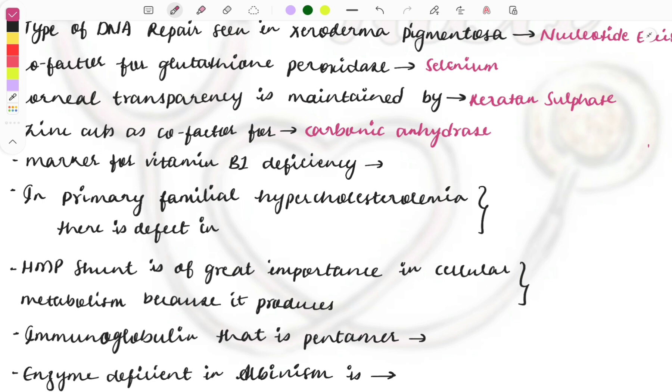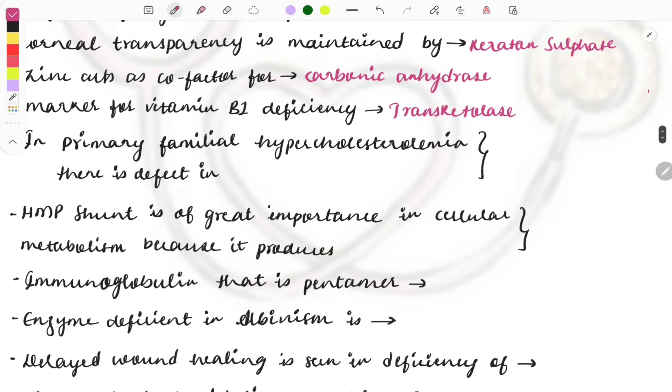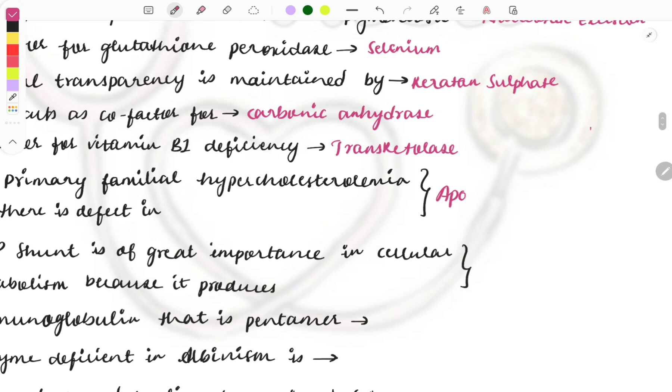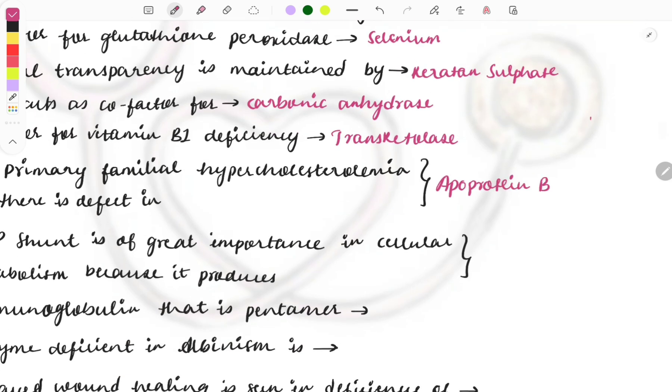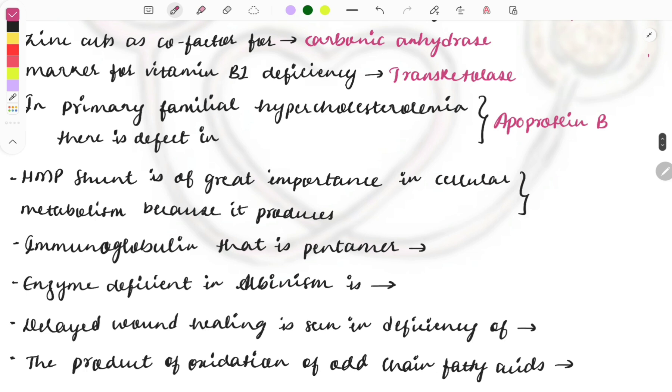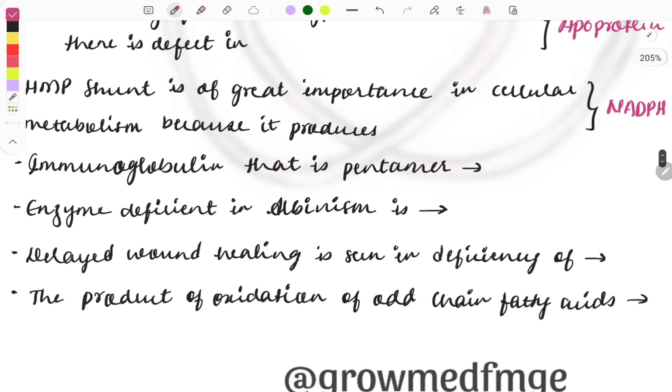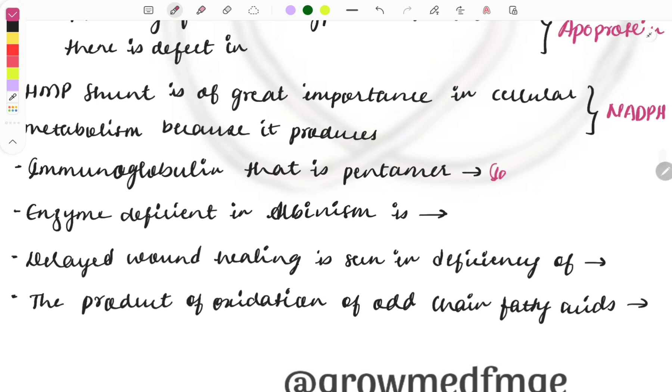Marker for vitamin B1 deficiency is transketolase. In familial or primary familial hypercholesterolemia, there is defect in which substance? It is apolipoprotein B. HMP shunt is of great importance in cellular metabolism because it produces which substance? It produces NADPH.